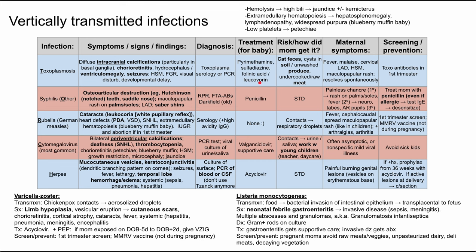The baby will be treated with pyrimethamine and sulfadiazine along with folinic acid or leucovorin. In terms of how the mom got it, it may have come from cat feces — pregnant women are advised to avoid cat feces and changing the cat litter. There are also cysts in soil that can end up on unwashed produce and in undercooked or raw meat. Maternal symptoms are nonspecific: fever, malaise, cervical lymphadenopathy, hepatosplenomegaly, and a maculopapular rash. It's usually a mild illness that resolves spontaneously, so the mom often doesn't even know she had it. We check for toxo antibodies in the first trimester for screening, though it doesn't always catch it.